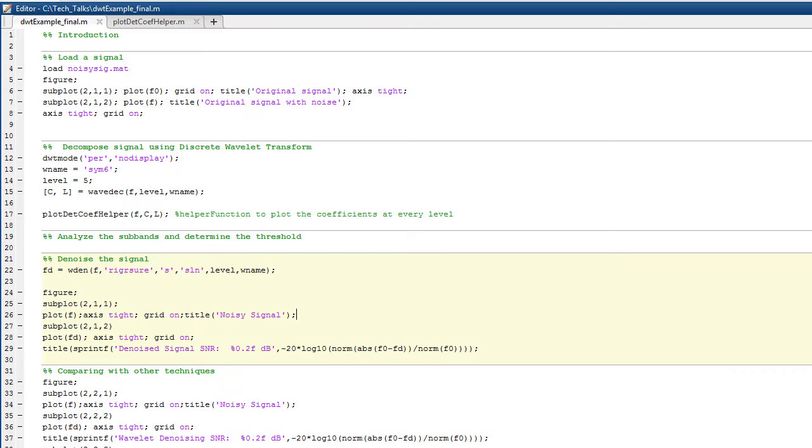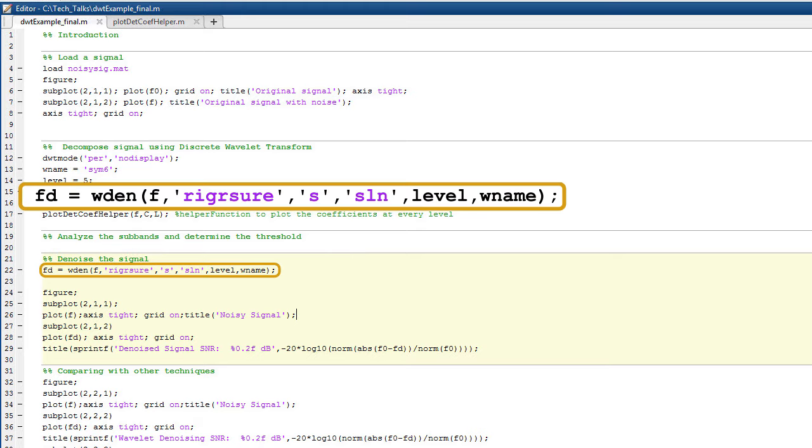Coming back to our example, let us denoise our noisy signal using sure-shrink with the soft thresholding technique. The entire process of thresholding the coefficients and reconstructing the signal from the new coefficients can be done using a single function as shown here.